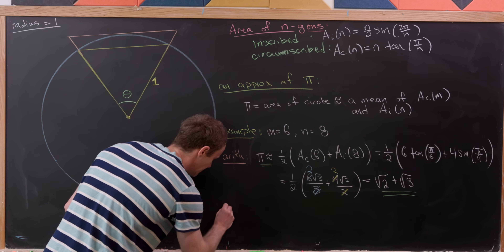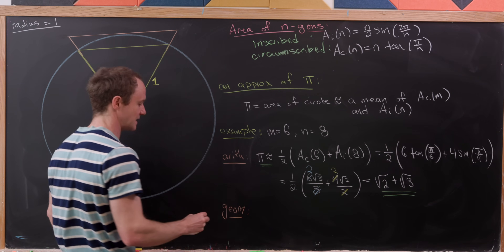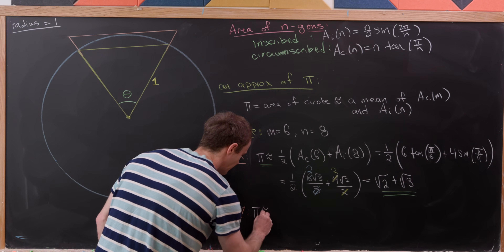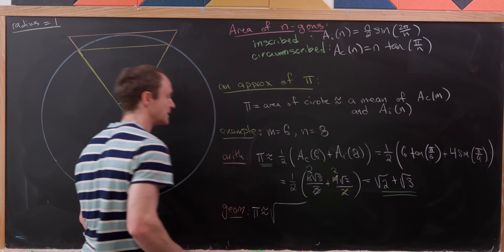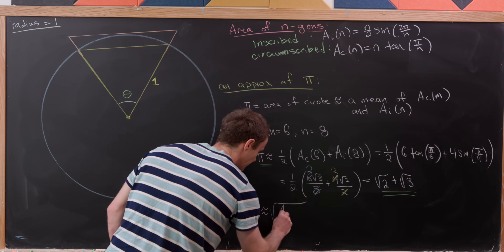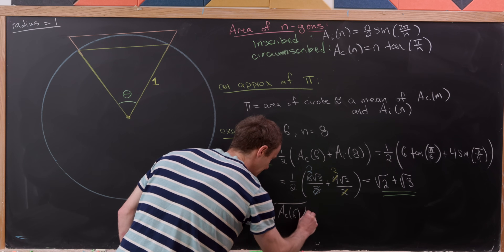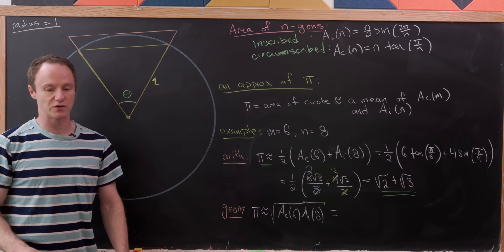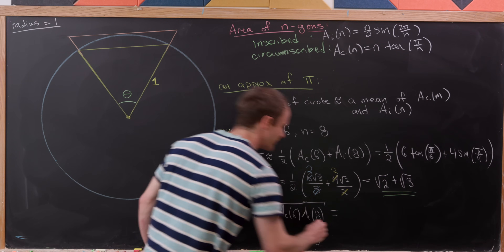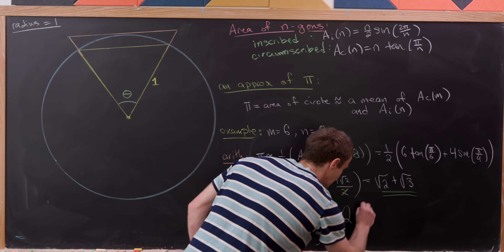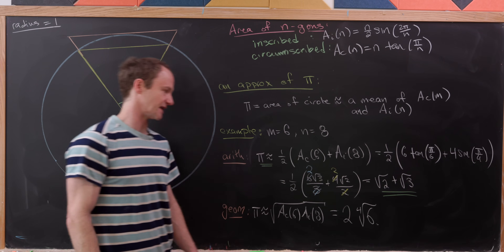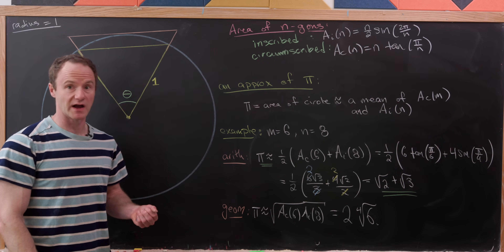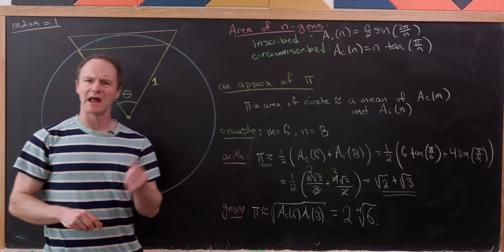For the geometric mean, pi is approximately the square root of Ac(6) times Ai(8). If you work through the calculation, you end up with 2 times the fourth root of 6. And from there you can find any other mean that you want as well.